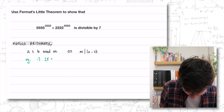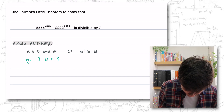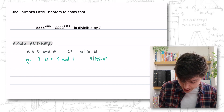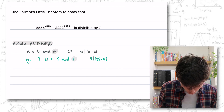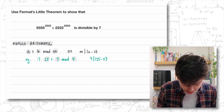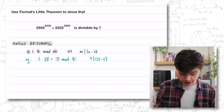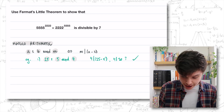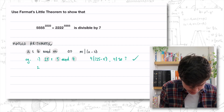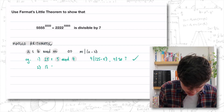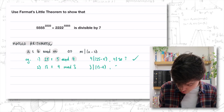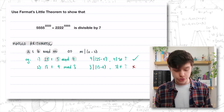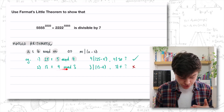Let's do a quick example. Is 25 congruent to 5 mod 4? What I'm basically asking is: does 4 divide 25 minus 5? M is 4, B is 5 and A is 25, so does 4 divide the difference? Does 4 divide 20? Yes, of course it does because 4 times 5 is 20, so that statement is true. The next one is: is 13 congruent to 9 mod 3? Does 3 divide 4? Clearly no, so 13 is not congruent to 9 mod 3.